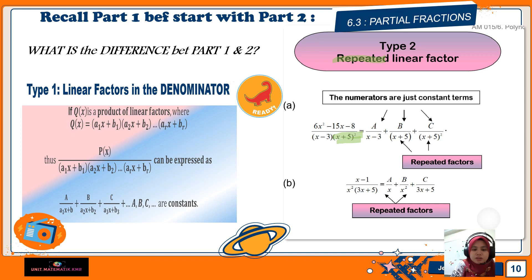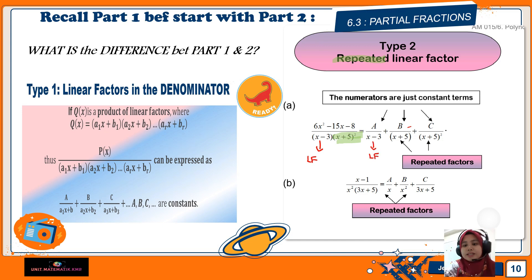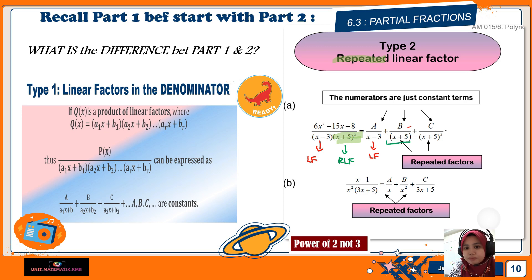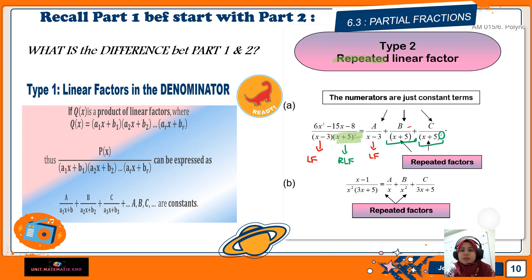For x − 3, there is no problem because that is just a linear factor — you rewrite it with a constant on the numerator. Now, for (x + 5)³, that is a repeated linear factor. When it is a repeated linear factor, you rewrite it starting from power 1, then power 2, and so on: so you get (x + 5), then (x + 5)², giving constants B and C. For repeated linear factors, we repeat the factor from power 1 to power 2 and beyond, depending on the question.